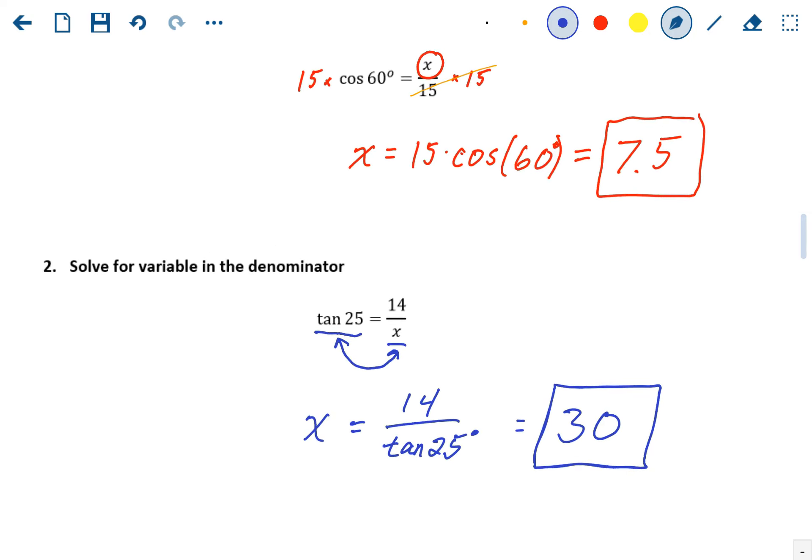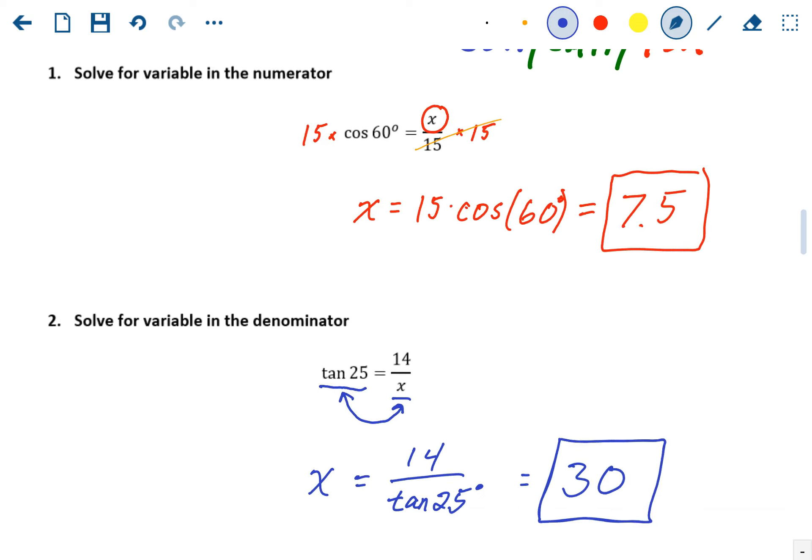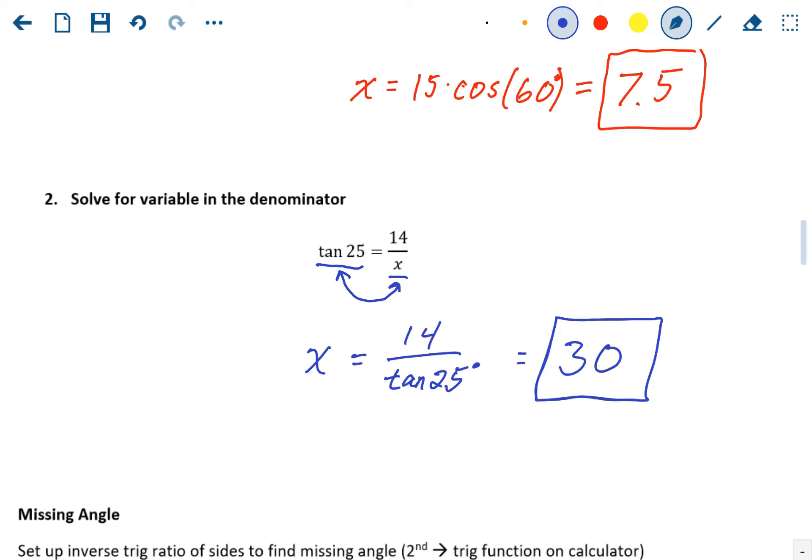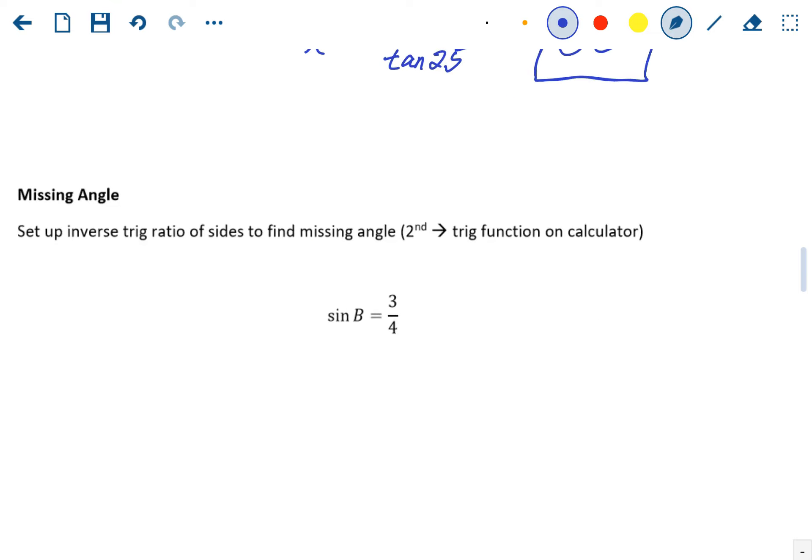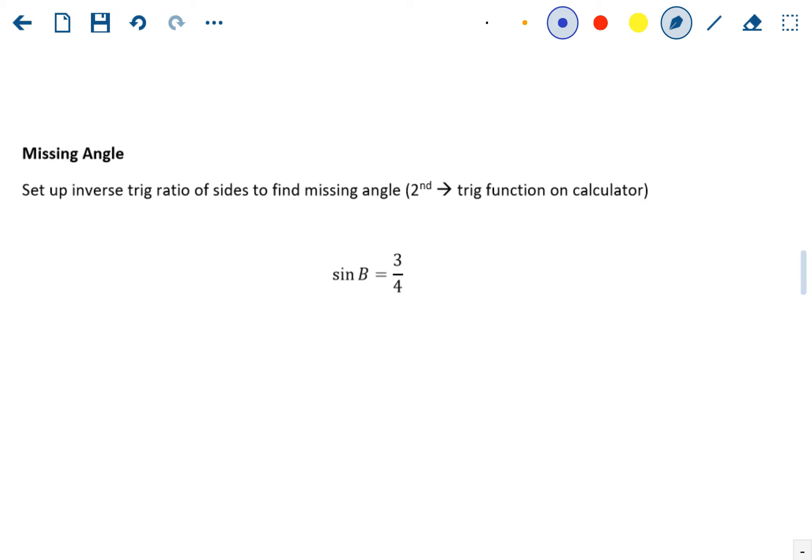So those first two scenarios are if you're missing a side length. You're either going to be missing the top side or the bottom side. The last scenario is you could be missing an angle. Now, if you're missing an angle, you have to set up an inverse trig ratio of the sides to find the missing angle. In this case, we don't know angle B. This is our variable.